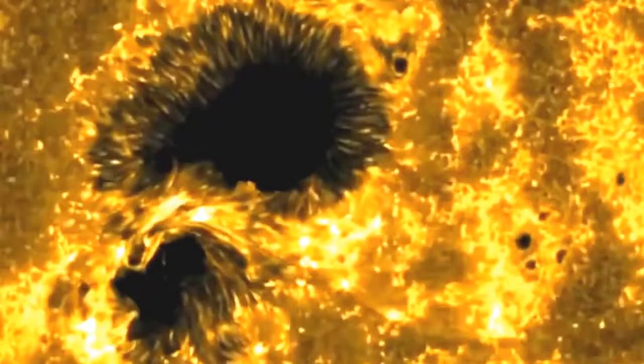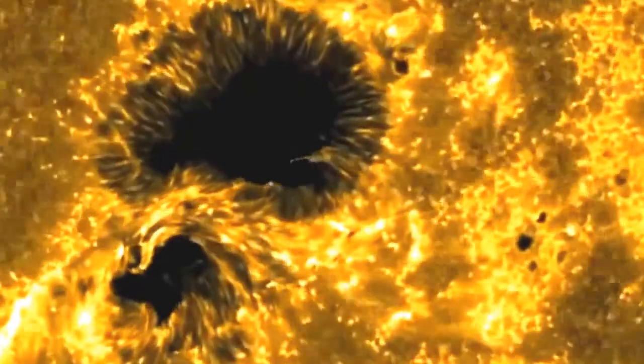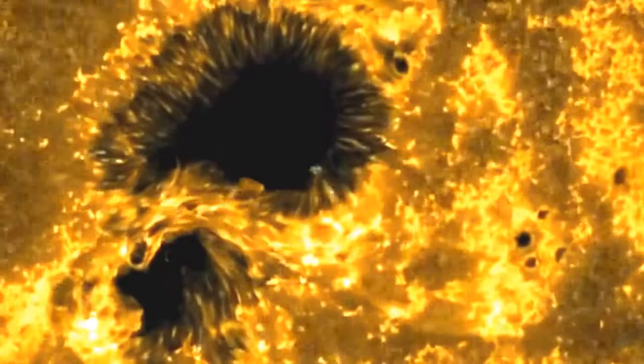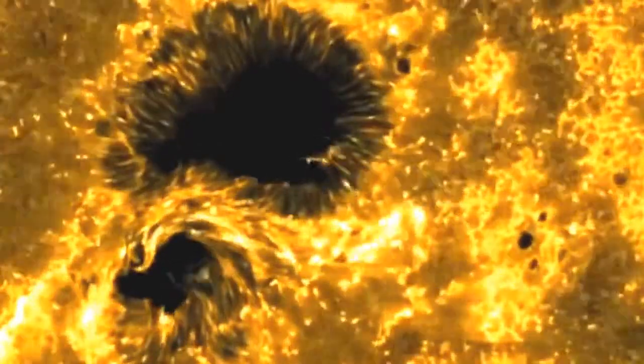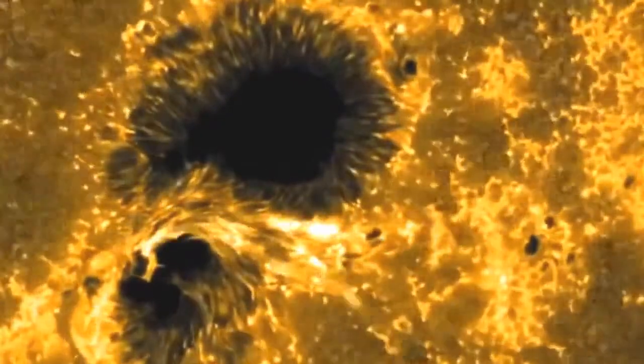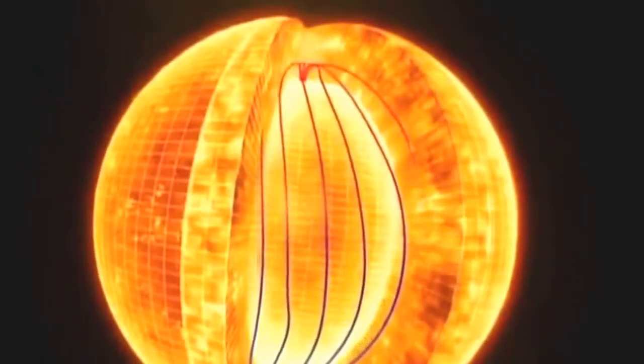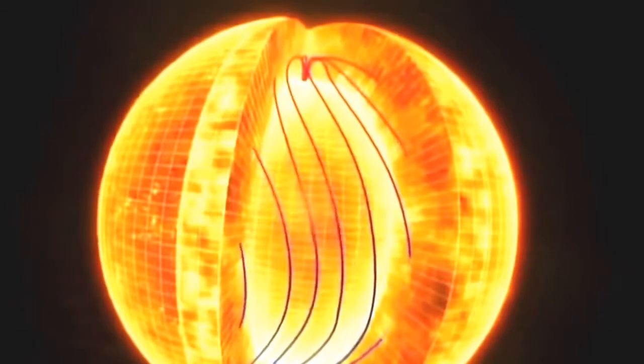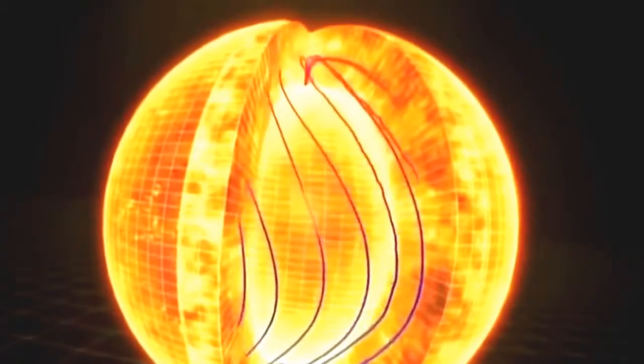The strong magnetic fields which create sunspots are the breeding ground for solar storms. The challenge is trying to decipher a pattern for when and how many will appear. As we watch sunspots over a period of many years, we see something very interesting. The number of sunspots at any given time will wax and wane over a period of about 11 years. And since we now know that sunspots are associated with strong magnetic fields, this tells us that the sun's magnetic fields are likewise going through a cycle.